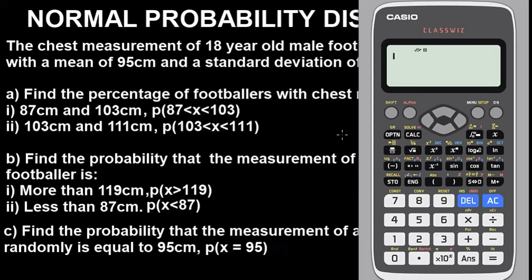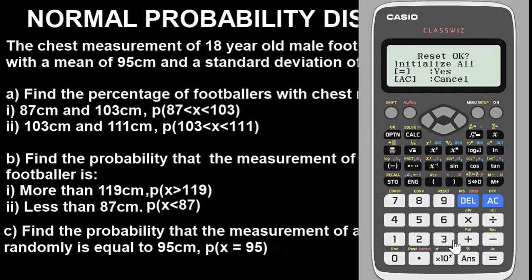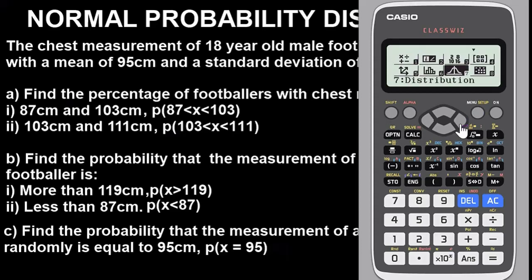Now let's get the Casio calculator. The very first thing you have to do — this is very important — is to clear any previous values stored on the calculator. To reset it, press the Shift button, then 9, then select option 3 to initialize, then press OK. Press OK again. Now we have cleared the calculator and it is in default mode. Next, we need to set it to the distribution mode, so we go to Menu option 7 for distribution.